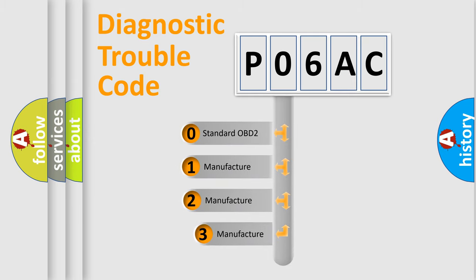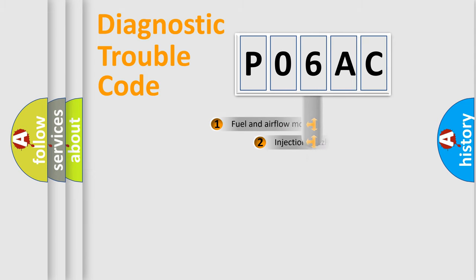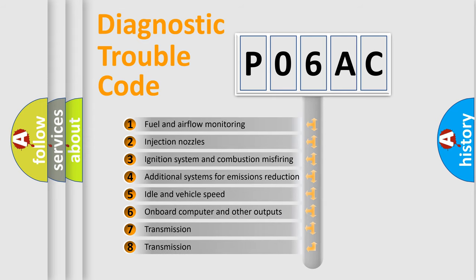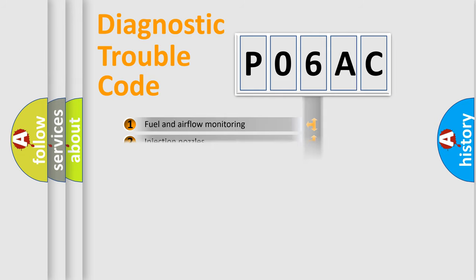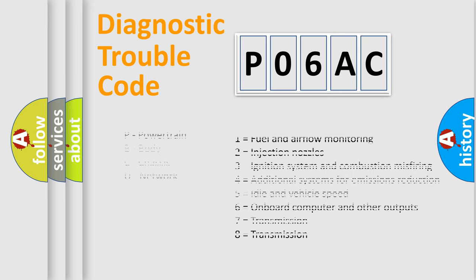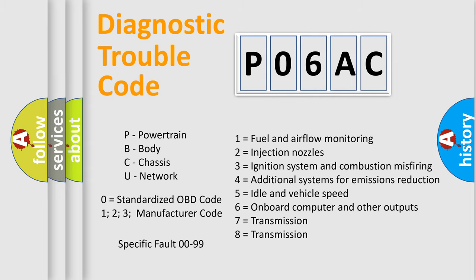If the second character is expressed as zero, it is a standardized error. In the case of numbers 1, 2, or 3, it is a more specific expression of the car-specific error. The third character specifies a subset of errors. The distribution shown is valid only for the standardized DTC code. Only the last two characters define the specific fault of the group. Let's not forget that such a division is valid only if the other character code is expressed by the number zero.